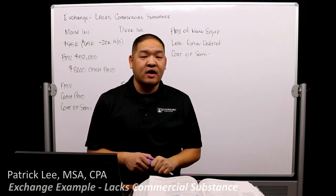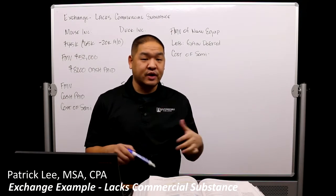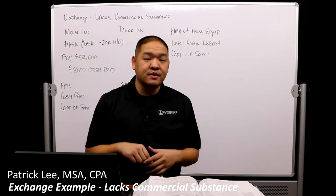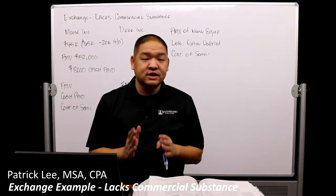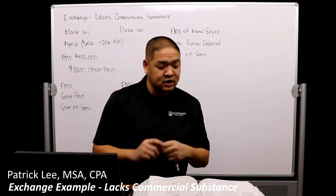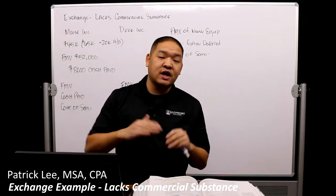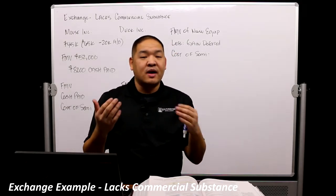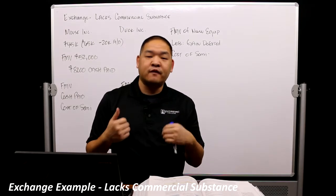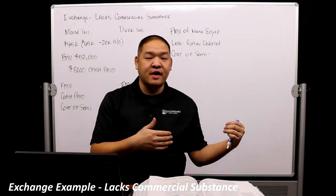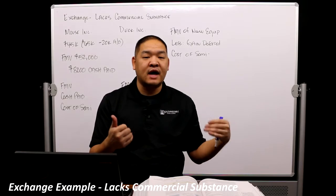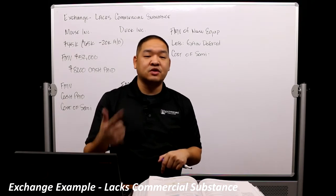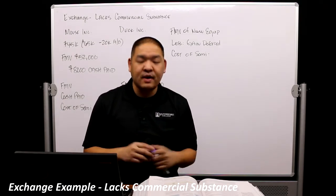In this lesson we're going to do an example of an exchange that lacks commercial substance, and in this problem there is a gain. Remember that commercial substance means that when an exchange occurs, the future cash flow changes as a result of it. For example, I exchange my old car for a new car — my future benefit changes because I can now use that car longer. In this case, the example lacks commercial substance.